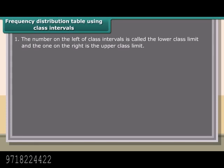1. The number on the left of class intervals is called the lower class limit, and the one on the right is the upper class limit.